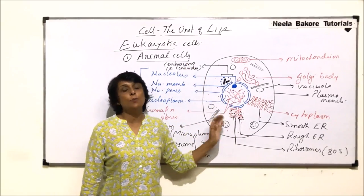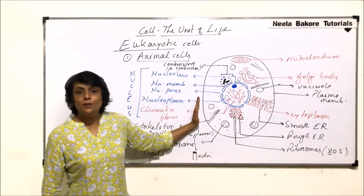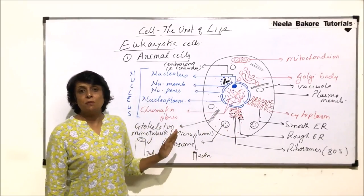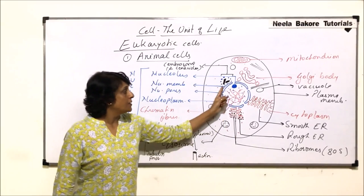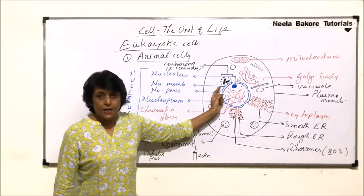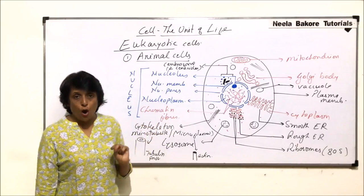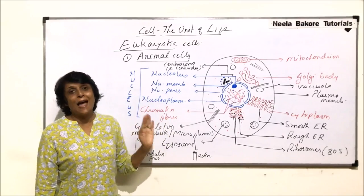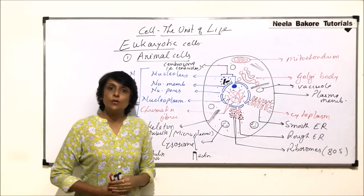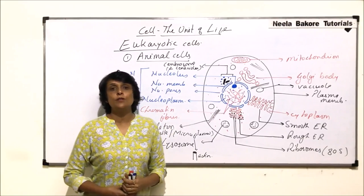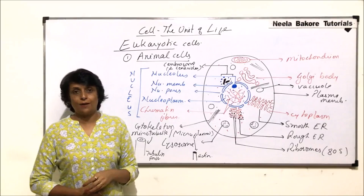In plant cells there would be some different structures. In animal cells, the plasma membrane is exposed and centrosome is present — these are two unique features of the animal cell. In the next part, we would take up the plant cell, which is the other important eukaryotic cell.